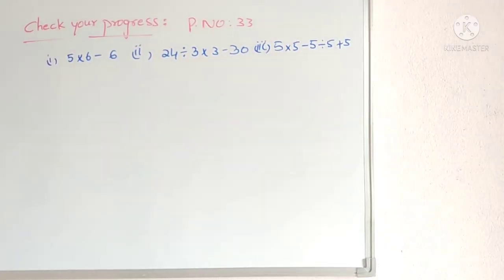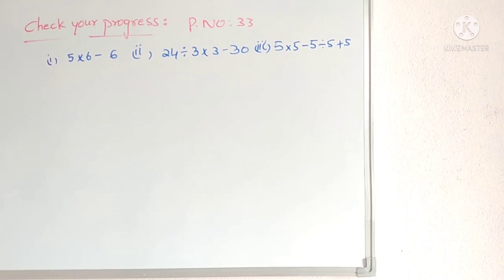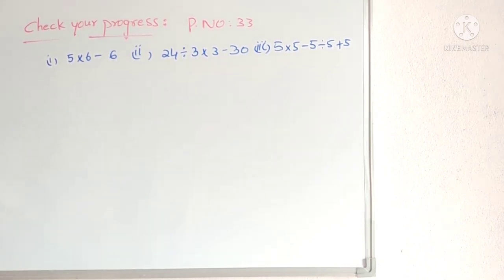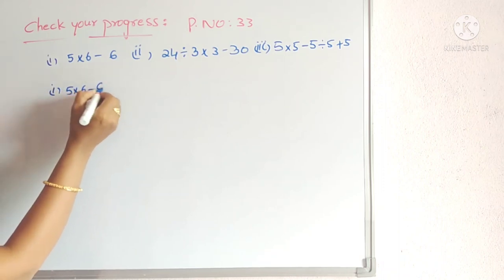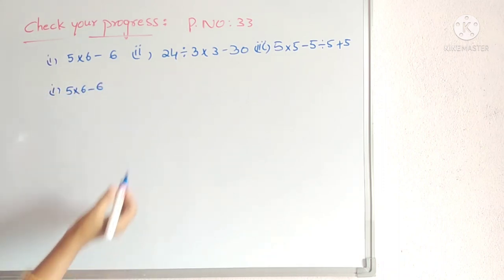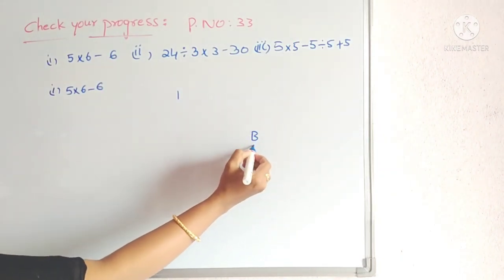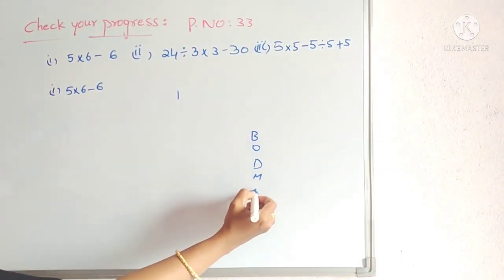Now we will see Exercise 1.4. We will look at the 'Check Your Progress' problem on page number 33. We have to simplify the following three problems. First one: 5 × 6 − 6. We have to follow BODMAS rule. Is there any bracket? No. Is there Of? No. Is there division? No.